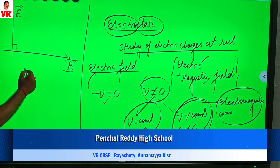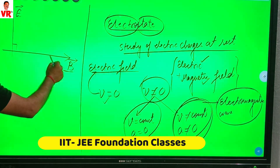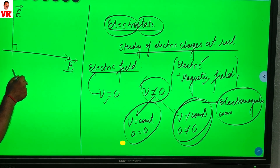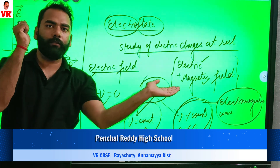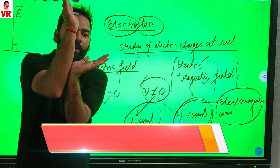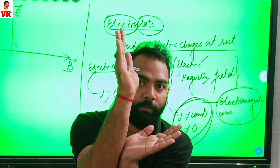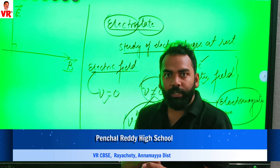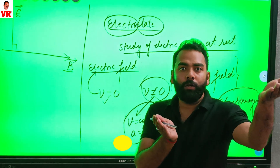The electric field is in the perpendicular, vertical direction — towards the y-axis. The magnetic field is in the horizontal direction — towards the x-axis. Both are moving in the forward direction and are perpendicular to the direction of propagation.